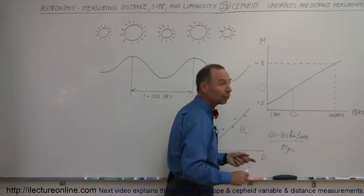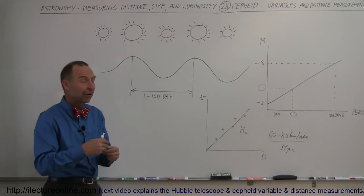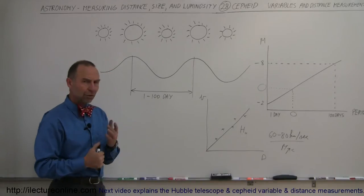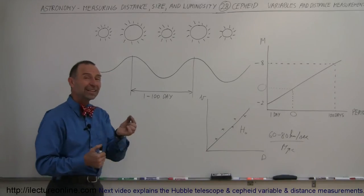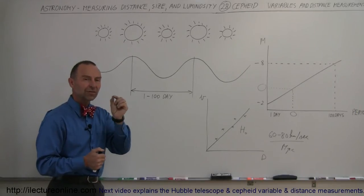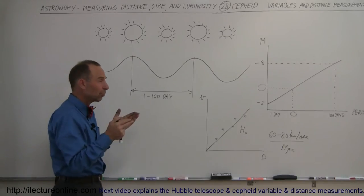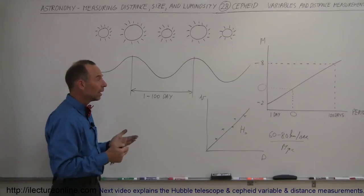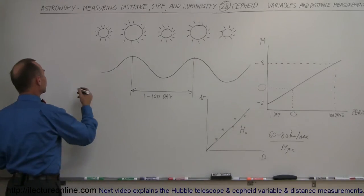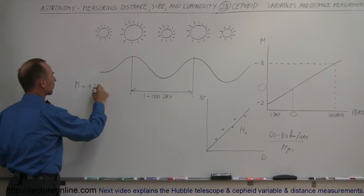The current accepted value falls right between those two values, so we became very accurate in establishing the Hubble constant using Cepheid variables. There's only one problem: a Cepheid variable is still a single star, and measuring the luminosity of a single star millions of light years away in another galaxy is very difficult, especially with Earth-bound telescopes. The best Earth-bound telescopes at the time could measure objects with an apparent magnitude of about plus 22.